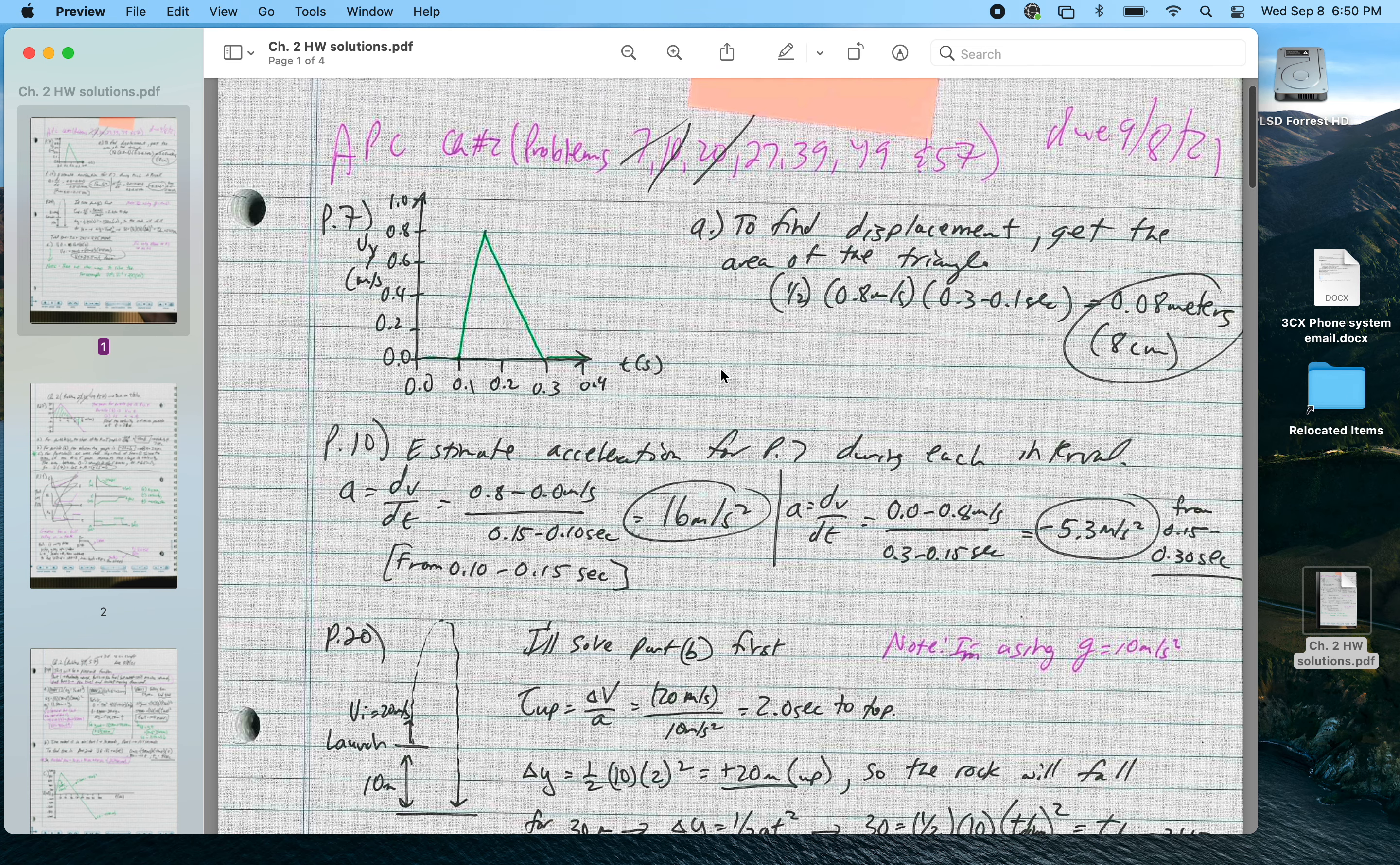To estimate the acceleration, I have to figure out the slope of this graph in this region and in this region. So from 0.10 to 0.15 seconds, it goes from 0 to 0.8 meters per second. So that's the slope of 16 meters per second squared.